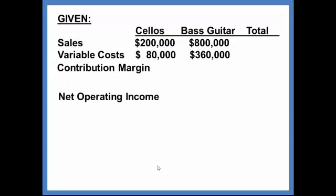To complete that income statement, we'll create a total column out there on the far right. And we'll see that total sales are $1,000,000. Total variable costs are $440,000. And that will leave a contribution margin of $560,000.